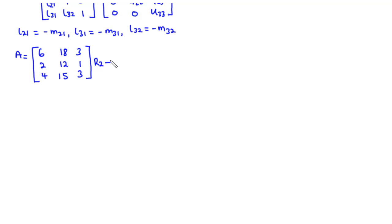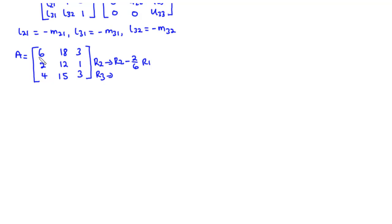For row 2, we multiply row 1 by 2 over 6 and subtract from row 2: 2 minus (2/6) times 6 becomes zero. For row 3, we multiply row 1 by 4 over 6 and subtract from row 3: 4 minus (4/6) times 6 also becomes zero. Since we are using naive Gaussian elimination, we do not perform any row swaps.